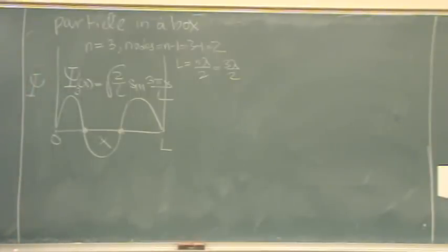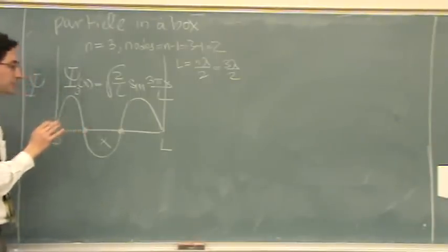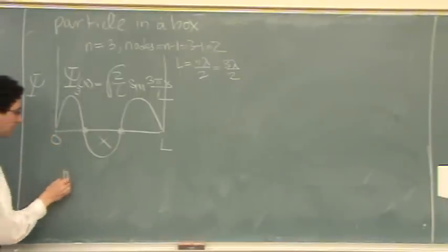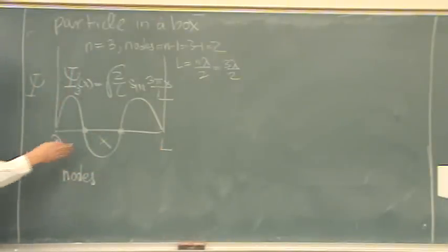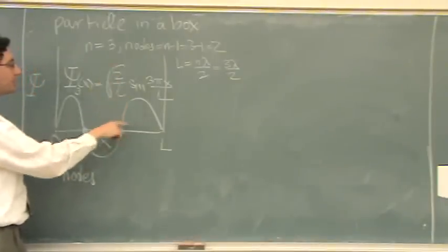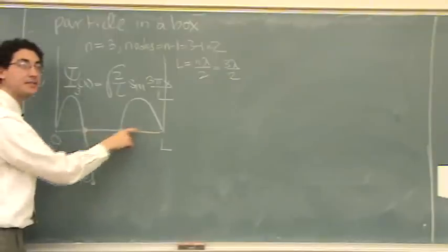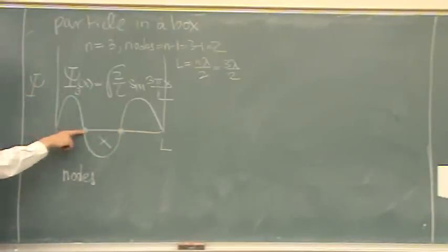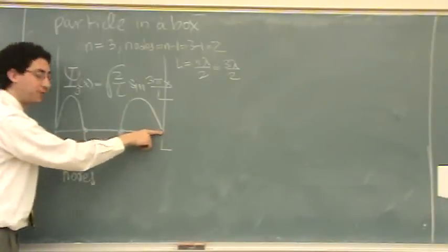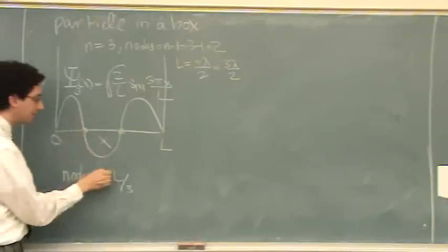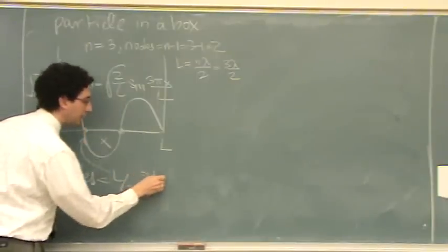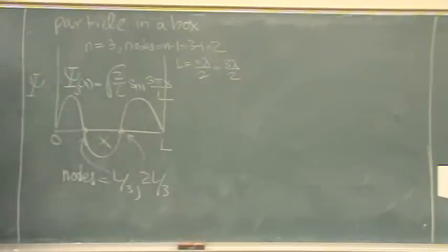There's psi. Now let's write out the nodes. Of course 0 and L are external nodes, but we're more interested in the internal nodes. You can see how the two nodes divide the wave function — divide the box into three parts. This is a third of the way out, this is two thirds the way out. So I say L over 3 for the first node, and 2L over 3 for the second. I do it more by inspection — that's my style.